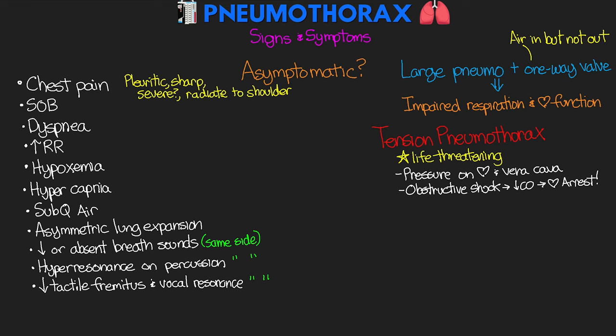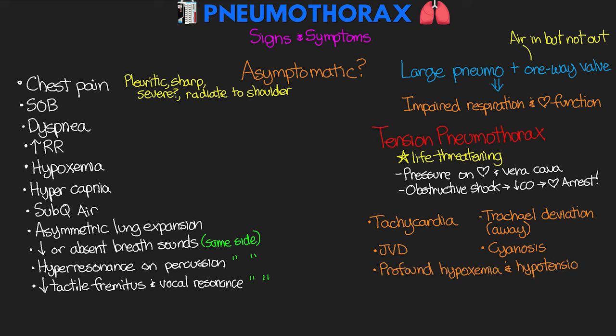Tension pneumothorax can also result from mechanical ventilation. So if you have a patient who's on the ventilator and sedated, it may be a little bit more difficult to spot early on. Additional things to look for include tachycardia from compensation of that decreased cardiac output, tracheal deviation moving over to the opposite side from the one affected by the tension, JVD, cyanosis, profound hypoxemia and hypotension, ultimately respiratory failure, and cardiac arrest.